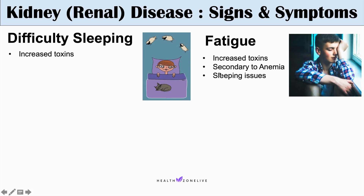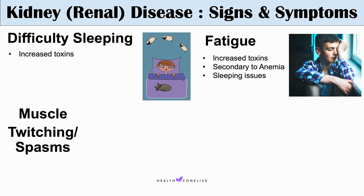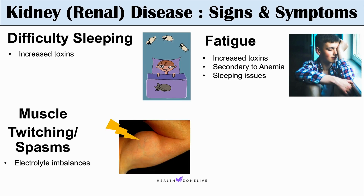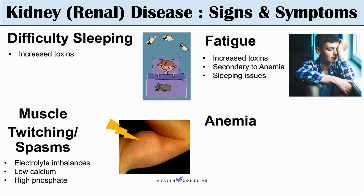We can also see anemia in kidney disease — low red blood cells or low hemoglobin. This is anemia of chronic kidney disease and often occurs later in the disease process. The kidney produces erythropoietin, or EPO, which stimulates the bone marrow to produce red blood cells. As the kidney becomes more damaged, it has less ability to produce erythropoietin, leading to fewer red blood cells and this anemia of chronic kidney disease.